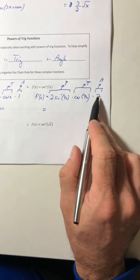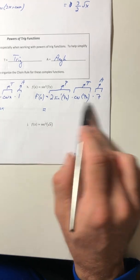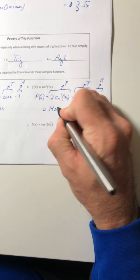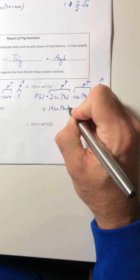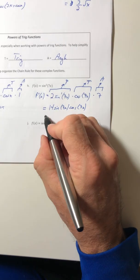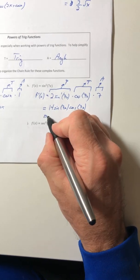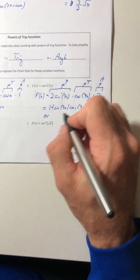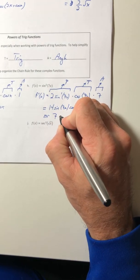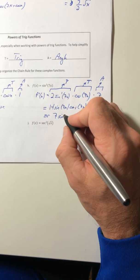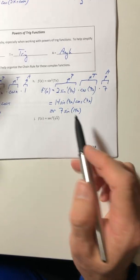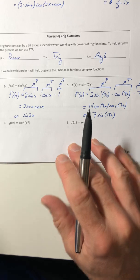Clean it up: 2 times 7 is 14. And if you wanted to, you can apply the double angle identity again and write 7 times sine(14x). You don't have to, but just be aware that it's possible.